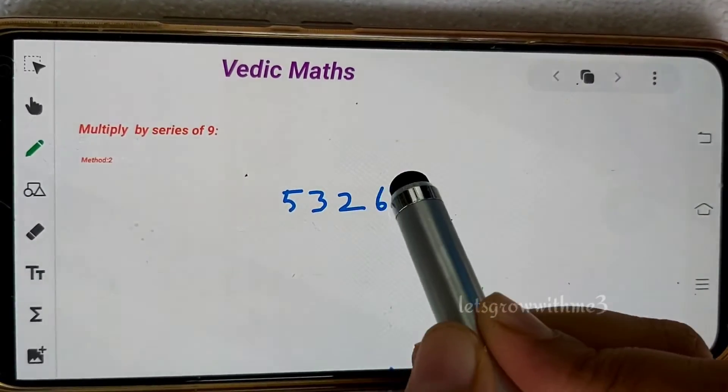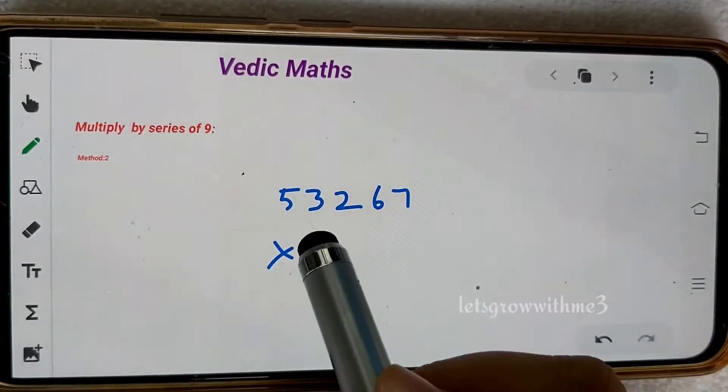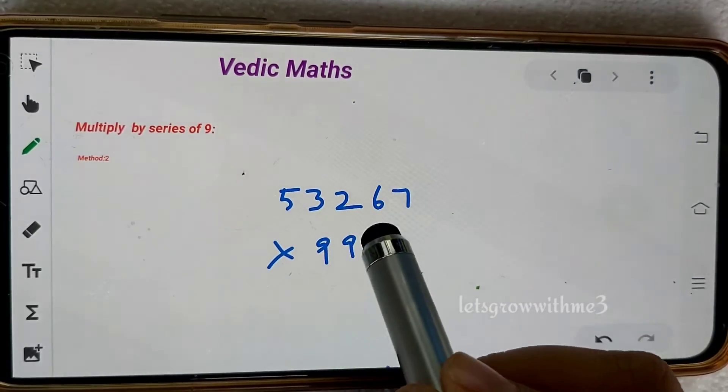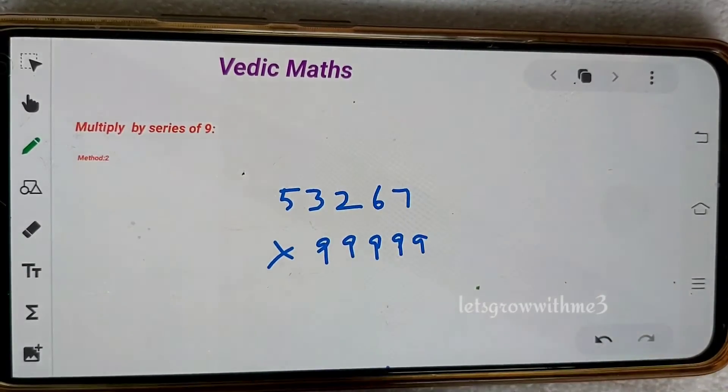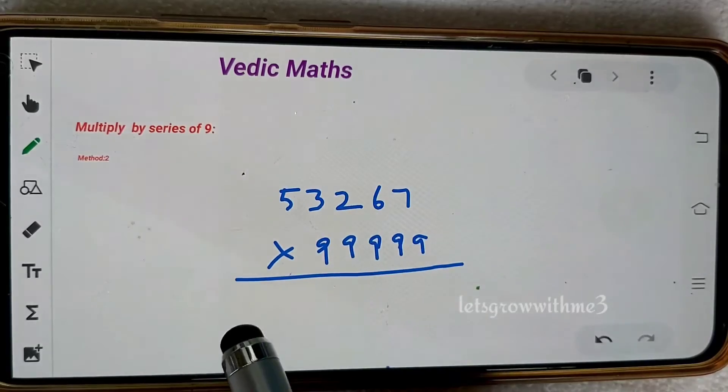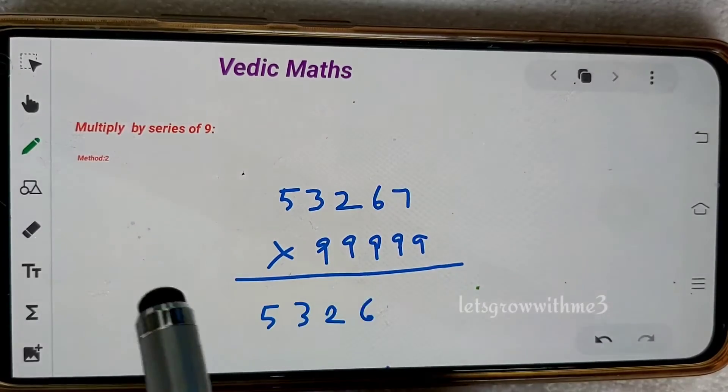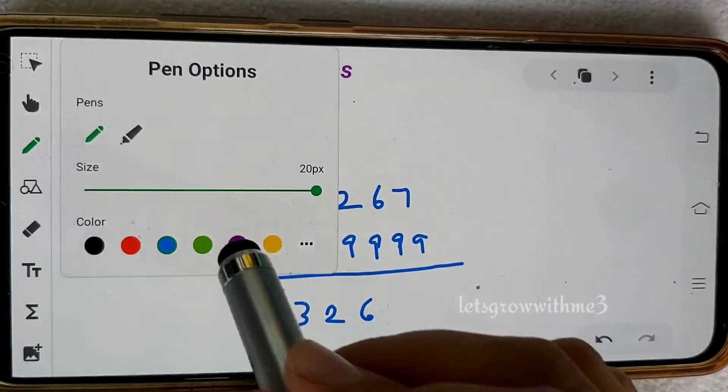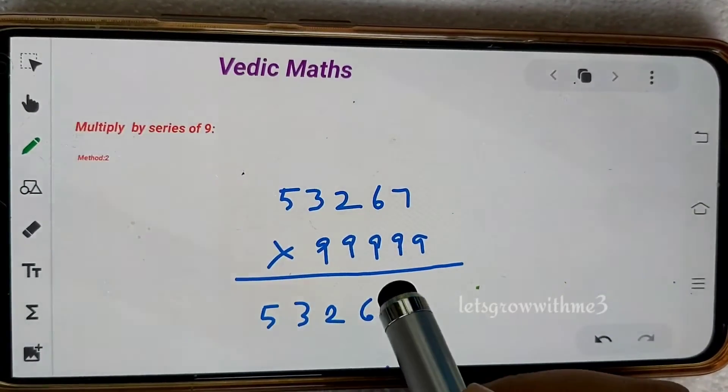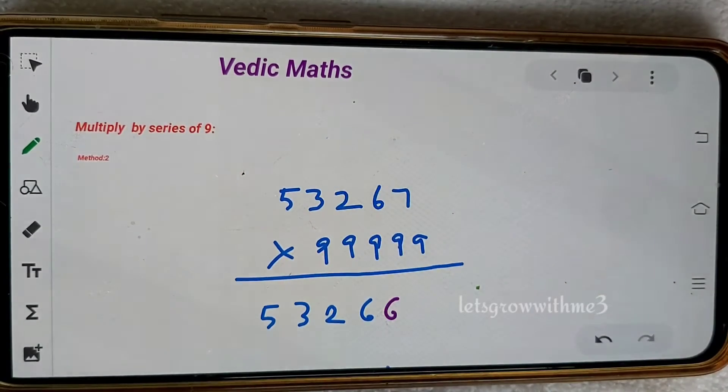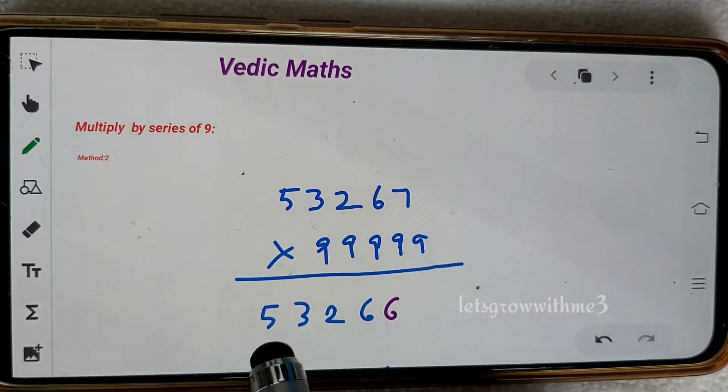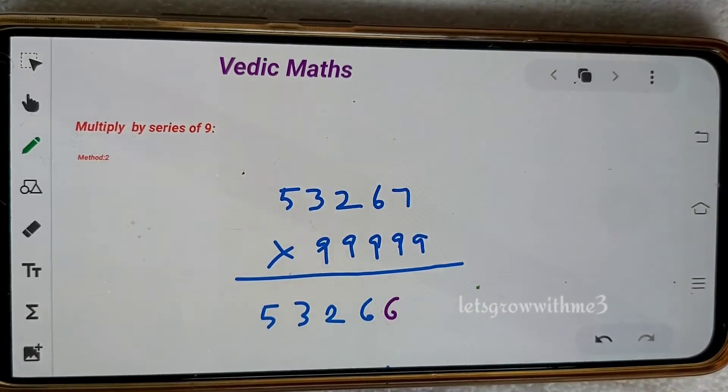53267 times 99999. I should have five 9s. The answer is 5326, and then decrement this value by one which is 6. Then we need to add the complement: 5 plus 4, 5 plus 4, 5 plus 4, 6 plus 3.